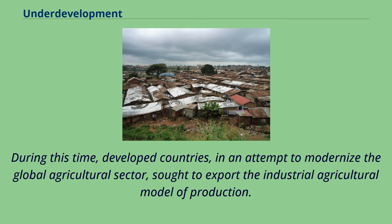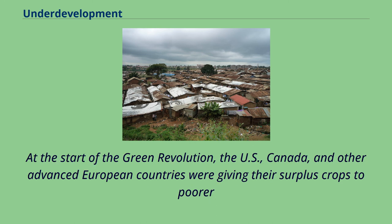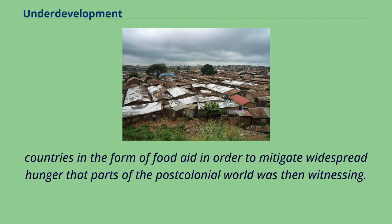The Green Revolution is a paradigm of a concerted effort of intervention in the name of global development. During this time, developed countries, in an attempt to modernize the global agricultural sector, sought to export the industrial agricultural model of production. At the start of the Green Revolution, the U.S., Canada, and other advanced European countries were giving their surplus crops to poorer countries in the form of food aid, in order to mitigate widespread hunger that parts of the post-colonial world was then witnessing.